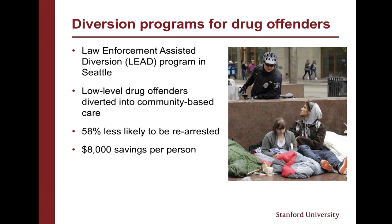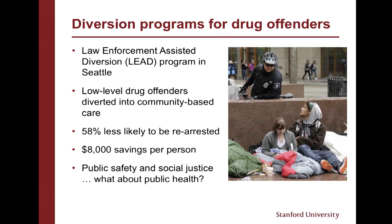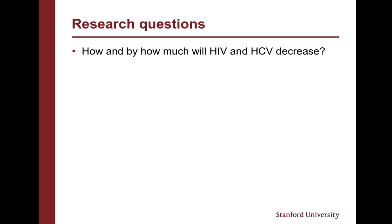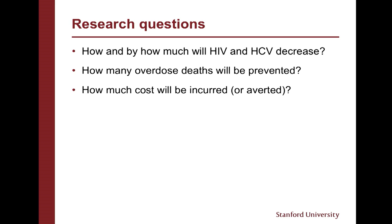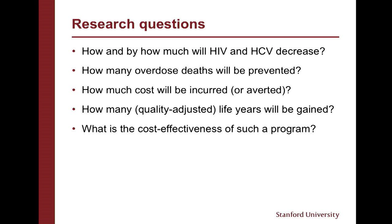We're really excited to be partnering with LEAD. We think what they're doing is really innovative in terms of public safety and social justice. As infectious disease modelers, we're also interested in what this policy means from a public health perspective. So some of the questions we can ask are: how much would we expect HIV and HCV to decrease if we expanded LEAD to the entire injecting population of Seattle? How many overdose deaths might be prevented? How much cost would be incurred or possibly averted? How many life years could be gained? And what might the cost effectiveness of a diversion program be?